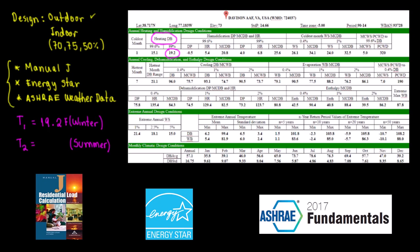The 99th percentile refers to the frequency of occurrence. For summer we're talking about cooling, and we have more options: 0.4%, 1%, and 2% percentile. Since we're matching the 99th percentile approach, we'll use the 1% percentile. This 1% means there is only a 1% probability that the temperature will go above this design temperature.